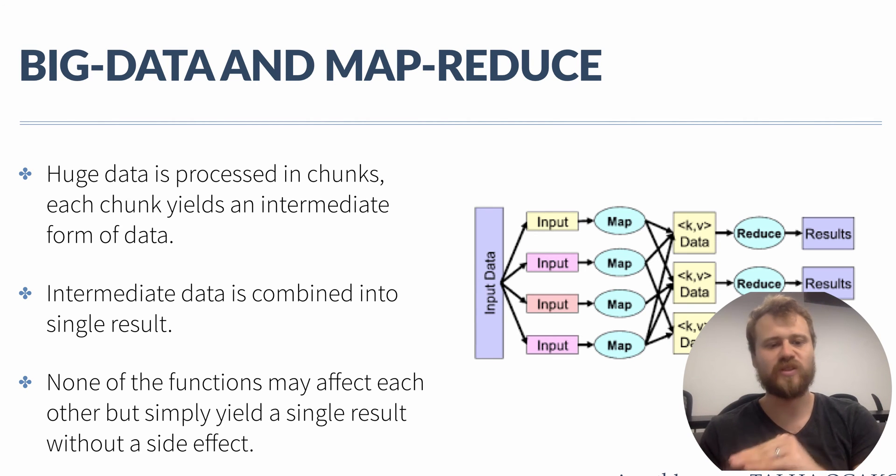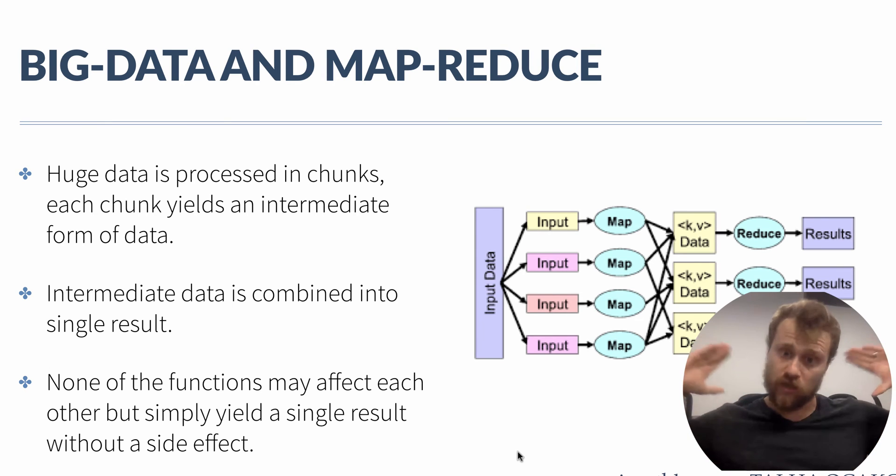This intermediate result is combined by some reducer functions and they yield simple results. So we are trying to shorten the process time by leveraging multiple CPU cores or multiple computer CPUs in a network.